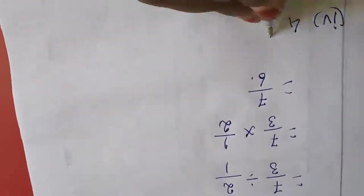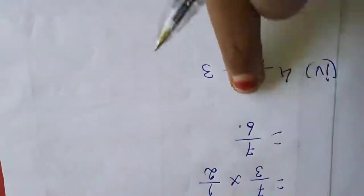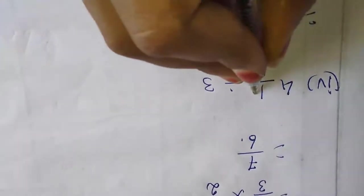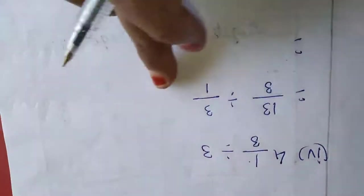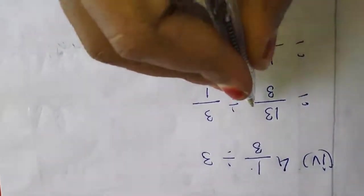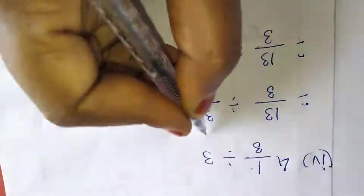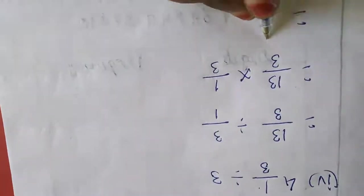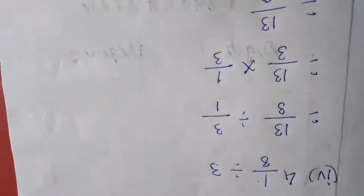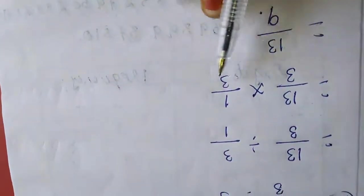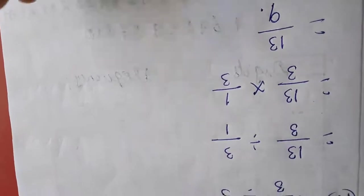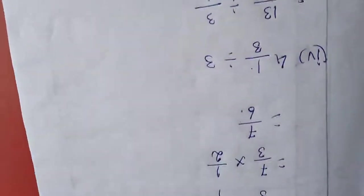Now the fourth sum: 4 and 1/3 divided by 3. First I will change this mixed number as an improper fraction — 4 times 3 is 12, plus 1 is 13, so 13/3. Then this 3 we write as 3/1. Next, change the divide symbol to multiplication and take the reciprocal: 13/3 multiplied by 1/3. Note: in multiplication and division, there is no need to make denominators the same — the denominators need to be equal only in addition and subtraction. Multiply numerator by numerator and denominator by denominator. The answer for the fourth sum is 13/9.